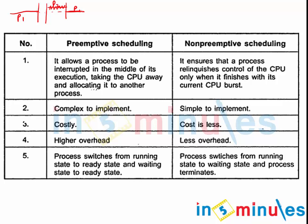In preemptive scheduling, any job can be broken or stopped immediately and the next higher priority process can take over. This has several disadvantages because it is very tricky to stop a thread or process in between. Non-preemptive scheduling, on the other hand, is simpler — if P1 is running and P2 with higher priority enters, P2 cannot interfere with P1 until P1 is finished, after which P2 starts.